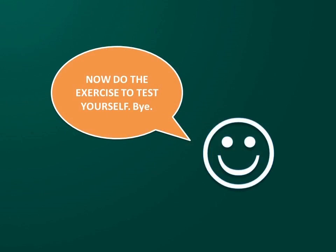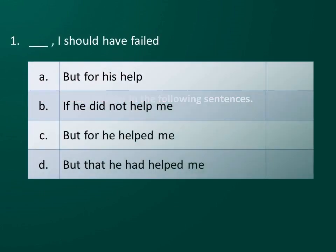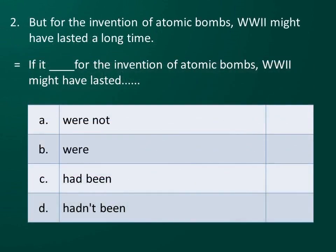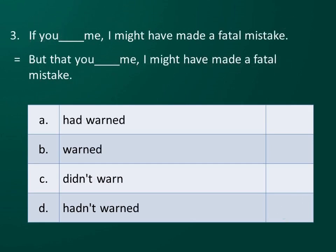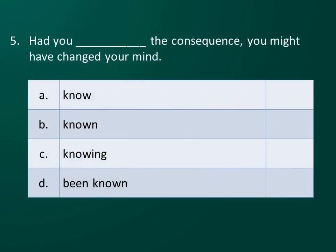Now do the exercise to test yourself. Choose the best answer in the following sentences. But for his help, I should have failed. If it hadn't been for the invention of atomic bombs, World War II might have lasted a long time. If you had warned me, I might have made a fatal mistake. But that you had warned me, I might have made a fatal mistake. But for your help, we would have lost the game. Had you known the consequence, you might have changed your mind.